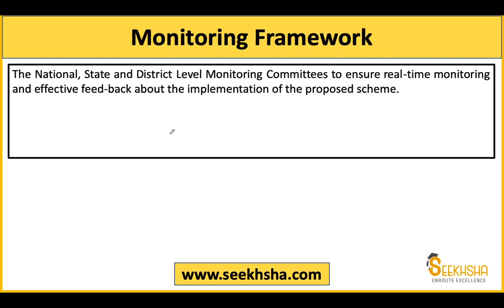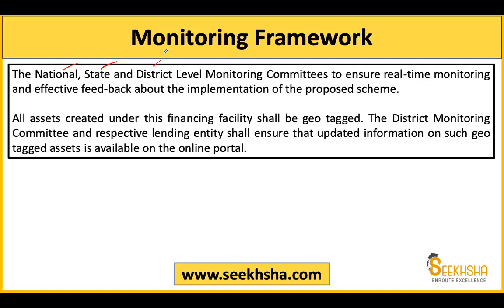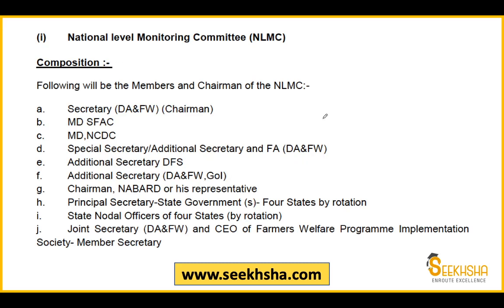For monitoring, a three-level framework has been established at national, state, and district levels. All assets created under this scheme will be geo-tagged so that monitoring committees and lending entities can track timely updates and verify that the scheme has delivered results. The chairperson of the National Monitoring Committee is the Secretary of the Department of Agriculture and Farmers Welfare.